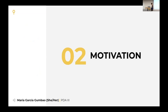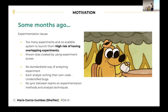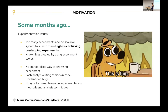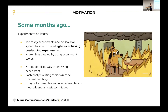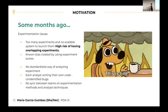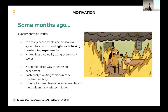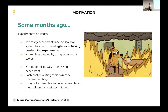Before we jump into the core content, I want to provide some context of why we need this, how it started, and why it is so important. If we rewind some months into the past and look at the state of experimentation at Global, we were running experiments, things were kind of working out, but it was not really right — like the GIF. We were saying 'this is fine,' but we knew there were some issues.